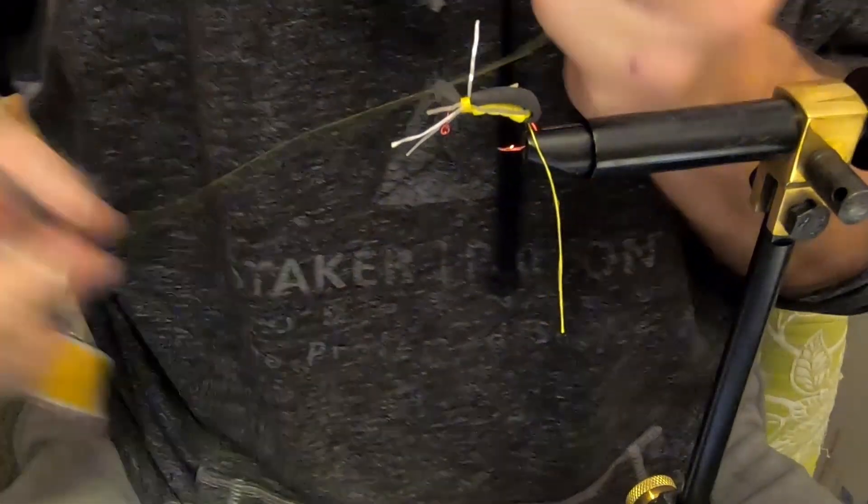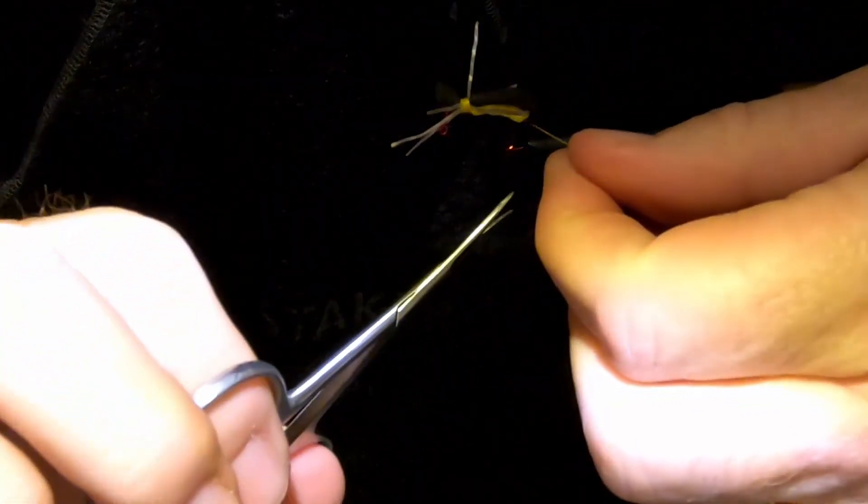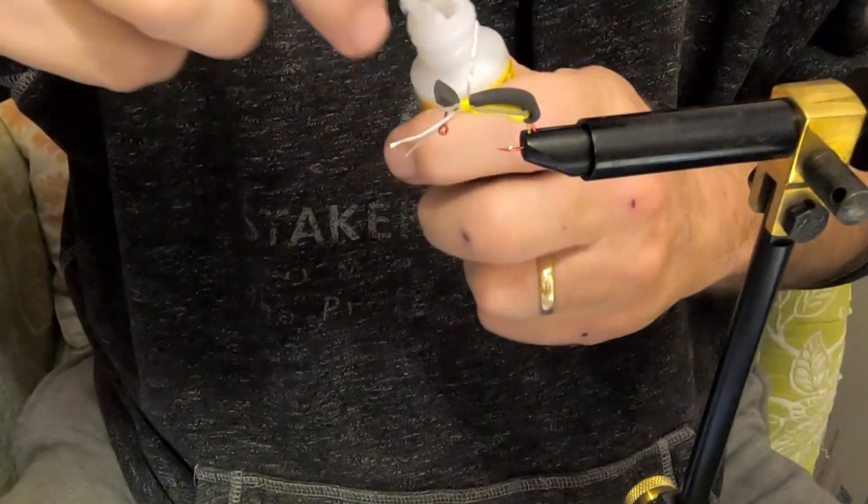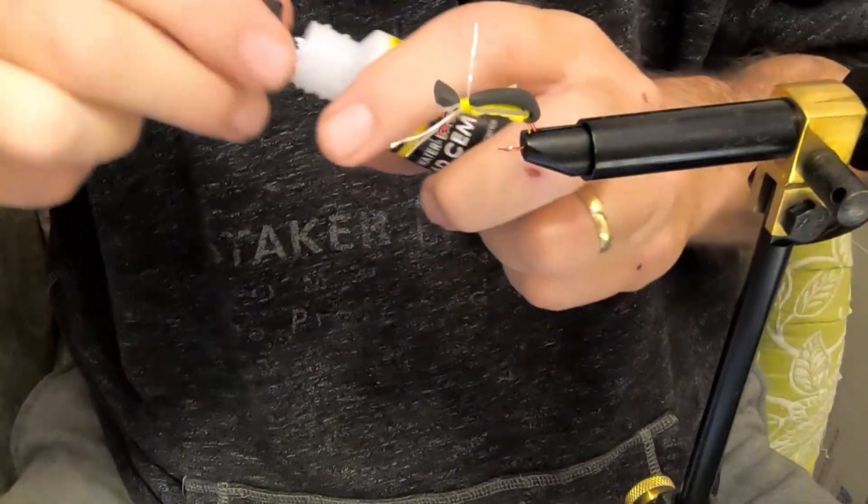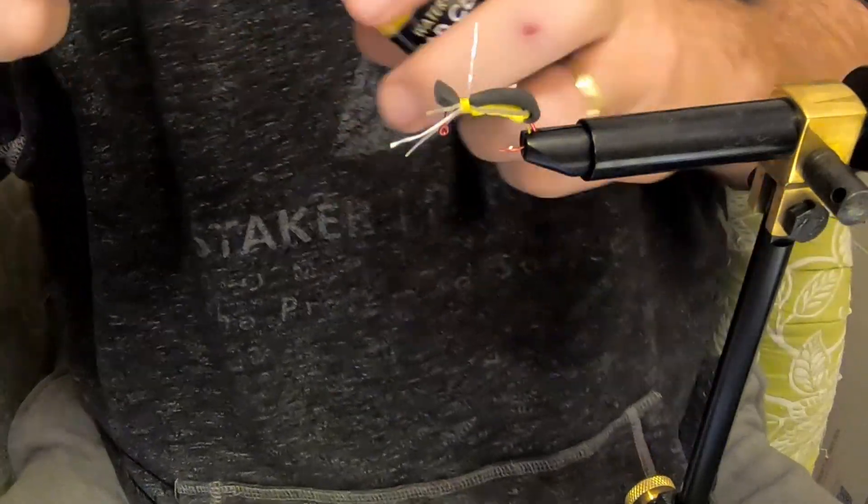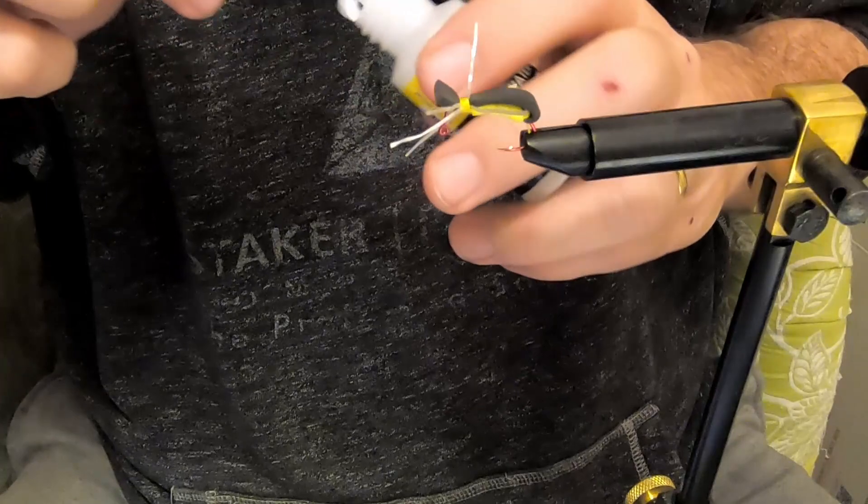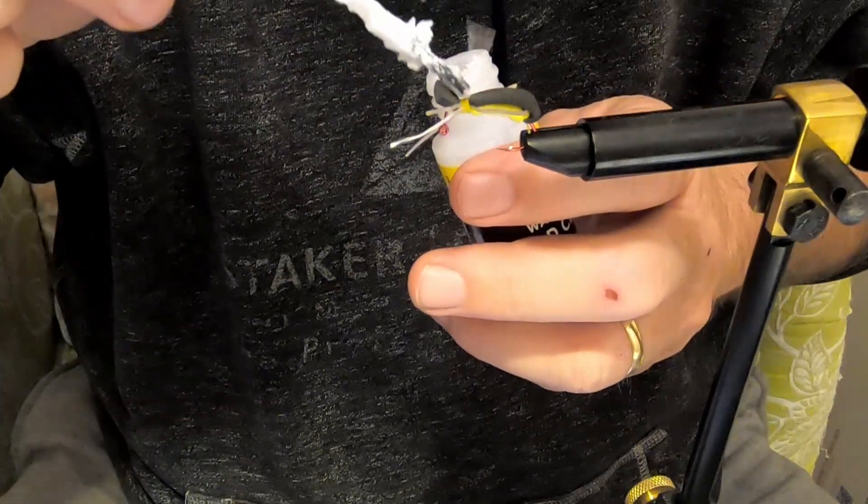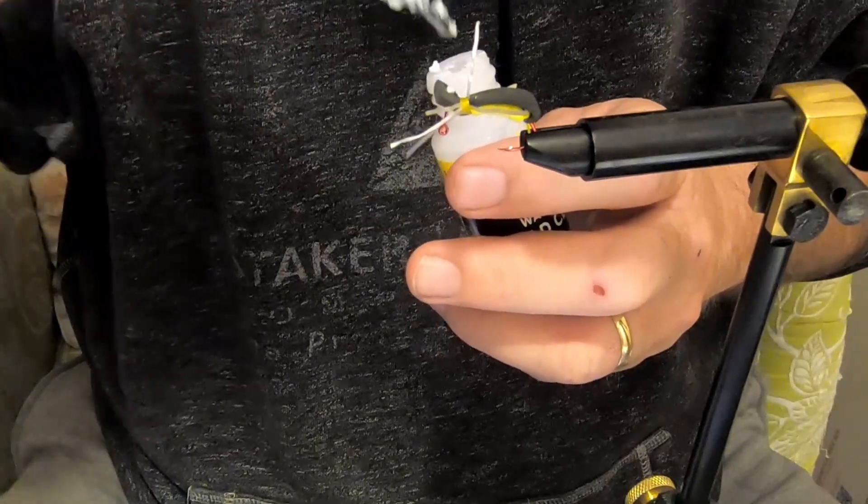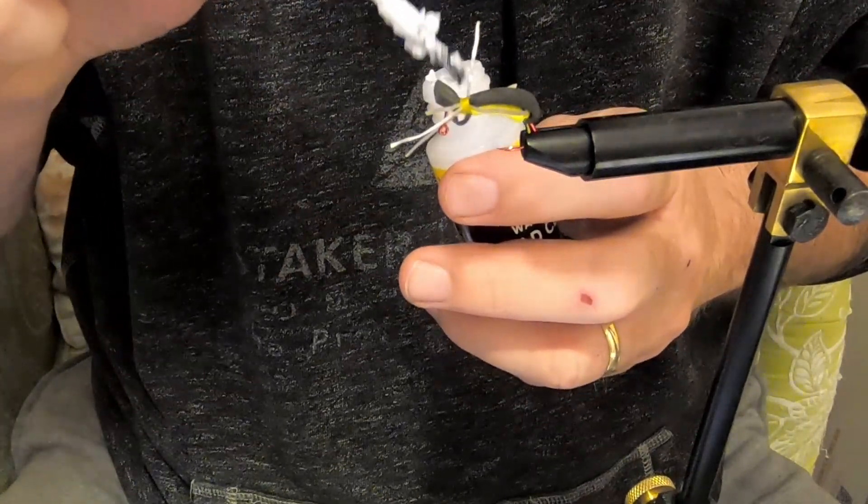And I'm going to trim that tail right there and a few little dabs of waterproof glue. And I intentionally tied this one a little bit loose. Get some glue down there. Looks like I need me a new bottle of glue, that's getting pretty gelled up, but she'll work.